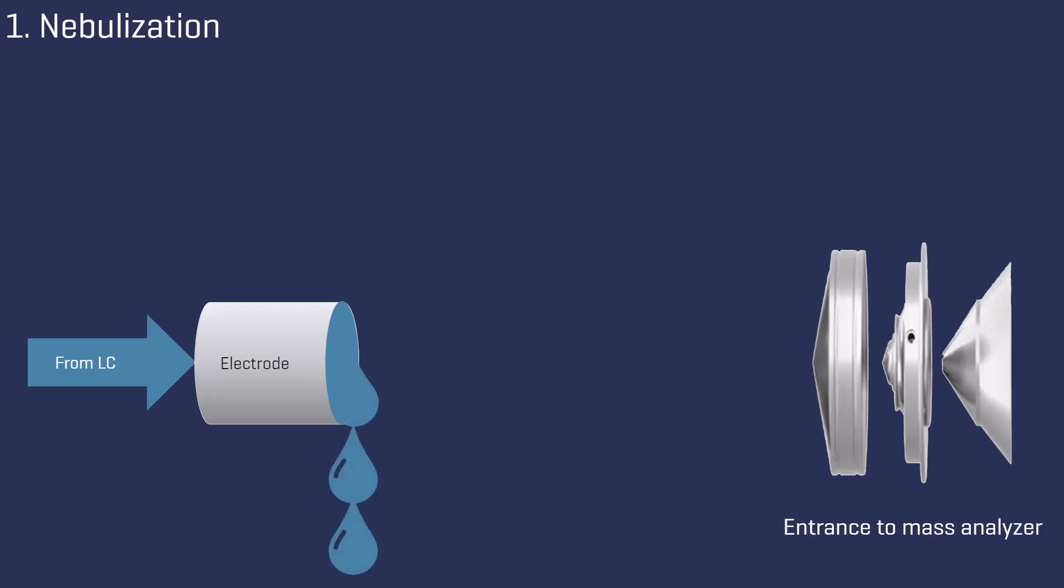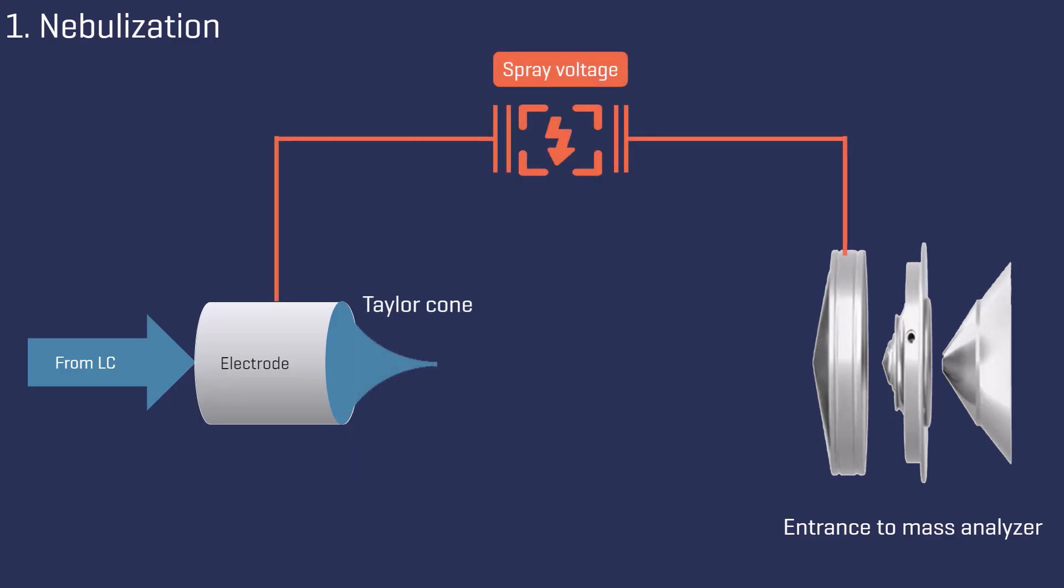As long as no spray voltage is applied, the liquid simply drips. But as soon as the spray voltage is switched on, the liquid at the end of the capillary forms a cone, known as Taylor Cone. Small droplets are emitted from the end, causing the liquid to be nebulized into a fine spray.